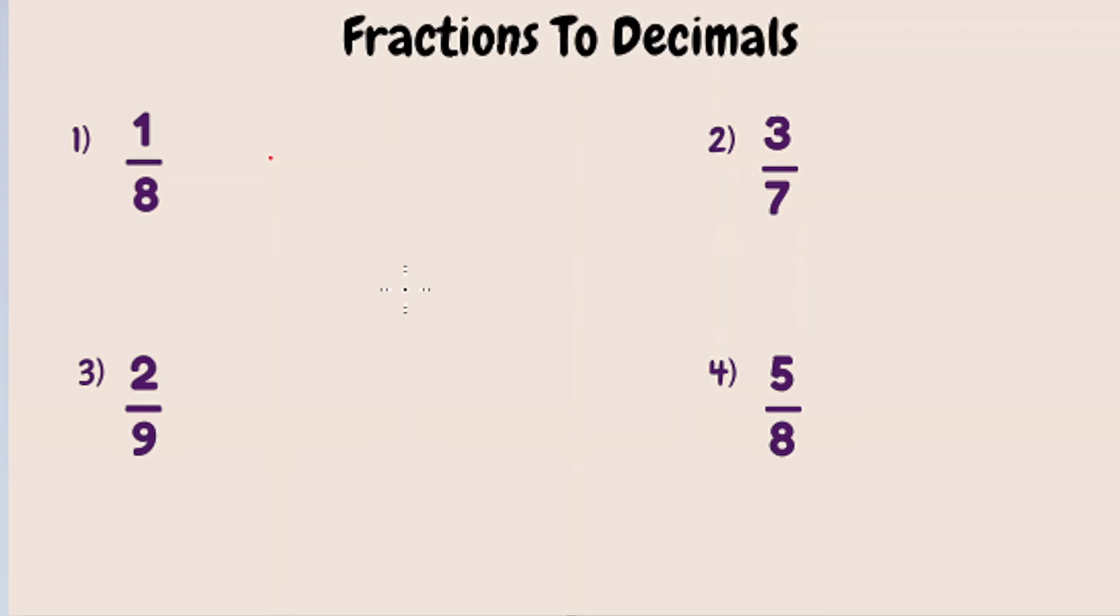So when we have a fraction, we know that we have a numerator and a denominator. If you would read the fraction as a division problem, it would be the numerator divided by the denominator. For example, if you look at the fraction one half, it can also be read as one divided by two. Let's look at these four examples and walk through how to turn these fractions into decimals.